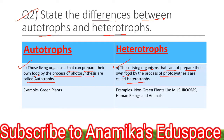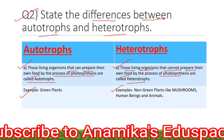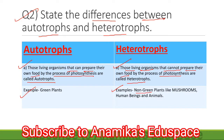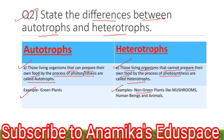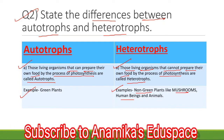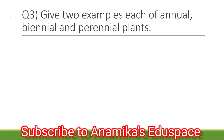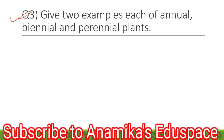Example for autotrophs: green plants. Example for heterotrophs: non-green plants like mushrooms, human beings, and animals. Question number 3.